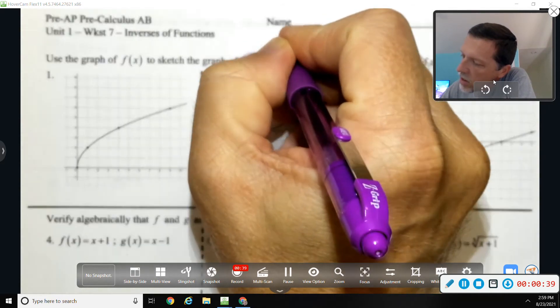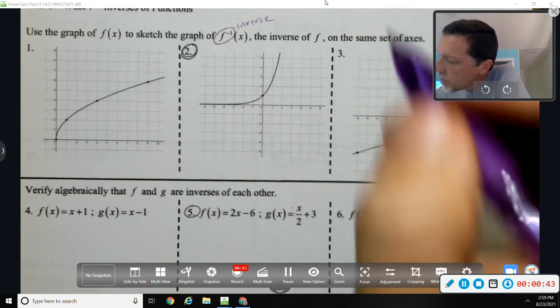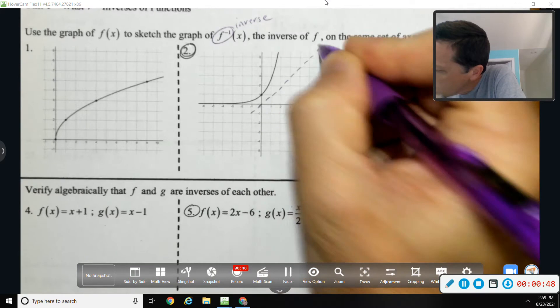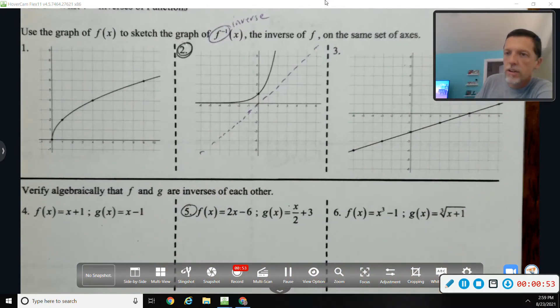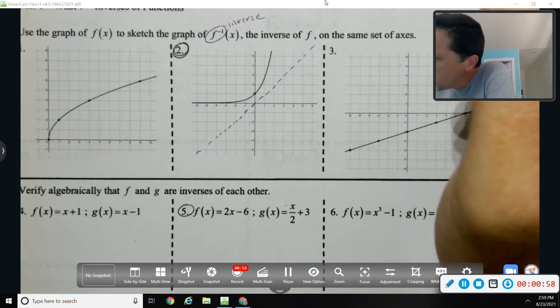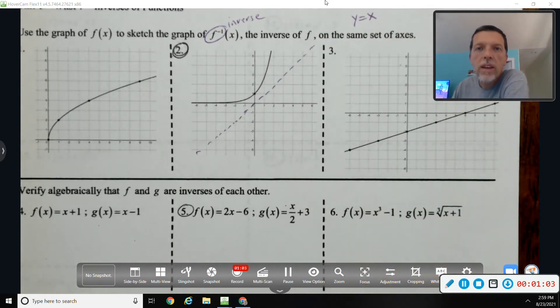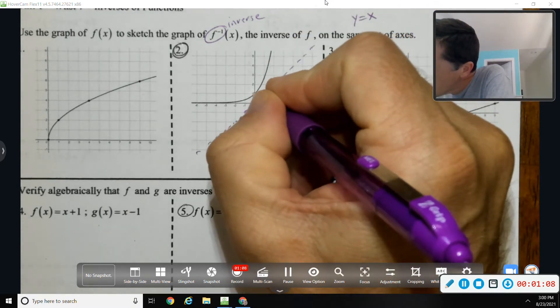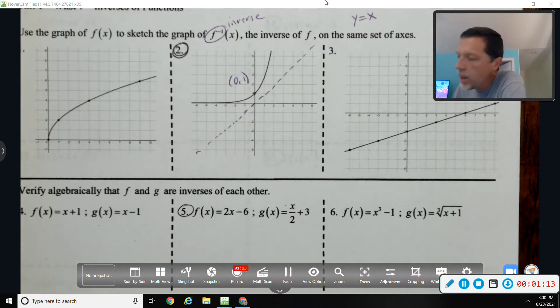Number two: use the graph of f of x to sketch the graph of the inverse of f on the same axis. So remember, the inverse goes through the line y equals x, so you can visually do it if you're capable of sort of visualizing what that looks like. You can also use the fact that for an inverse, y equals x and x equals y. So you can use that as well.